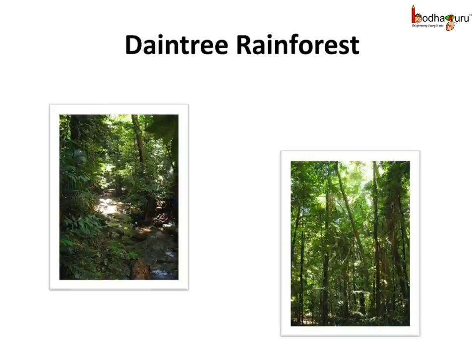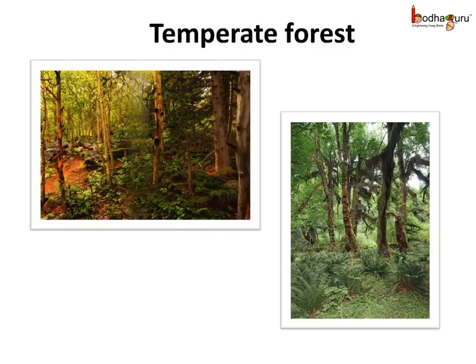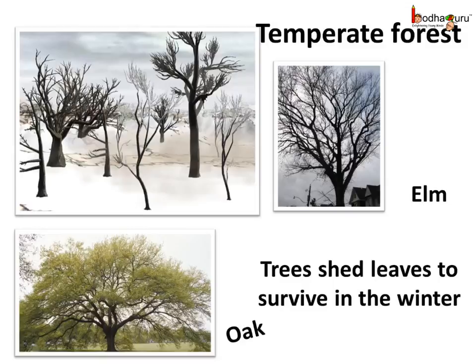Now let us see a different type of forest. In East North America, Northern Asia, and Western and Central Europe, forests of deciduous trees like the maple, oak, elm etc. can be found. The temperature here becomes too low in the winter, as low as minus 30 degrees Celsius. So the plants shed their leaves once a year, mostly in the winter, so that snow cannot get settled onto them. The yearly rainfall on average is less than 200 cm. These types of forests are called temperate forests. The trees have broad leaves to get enough sunlight in the summer.